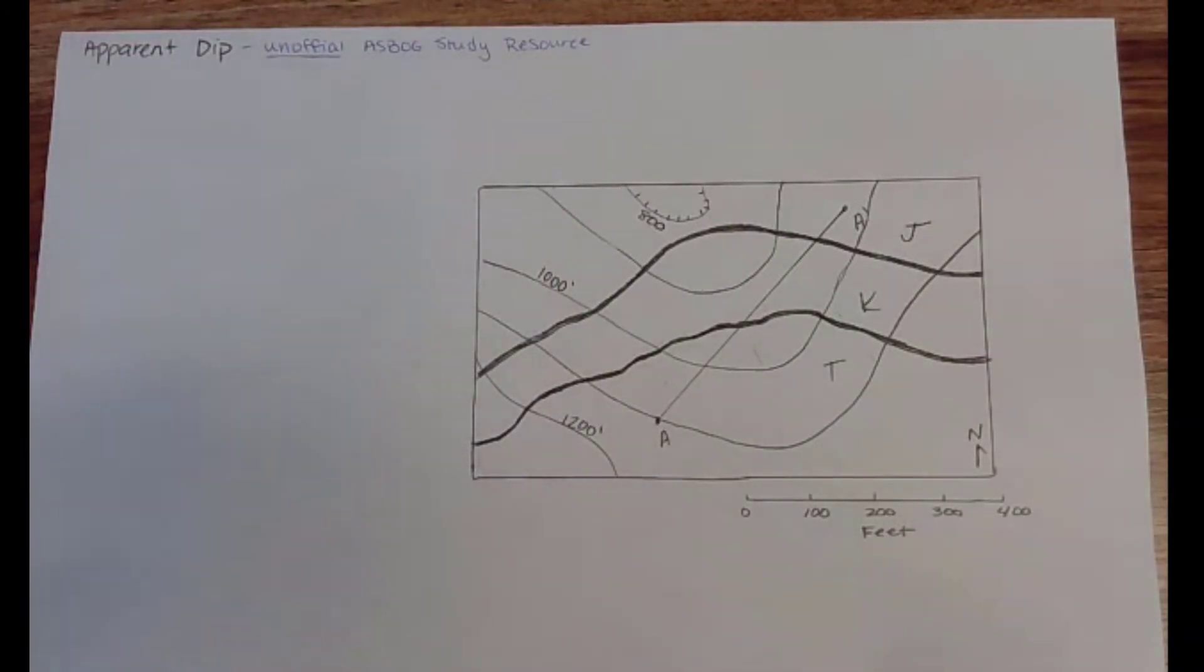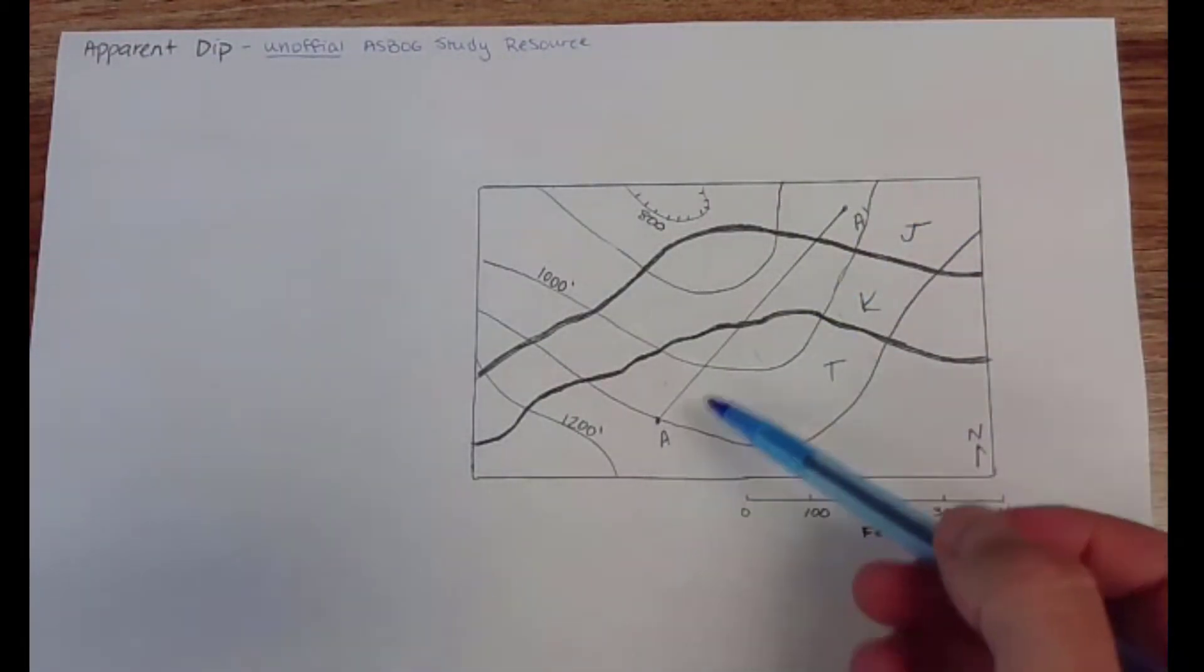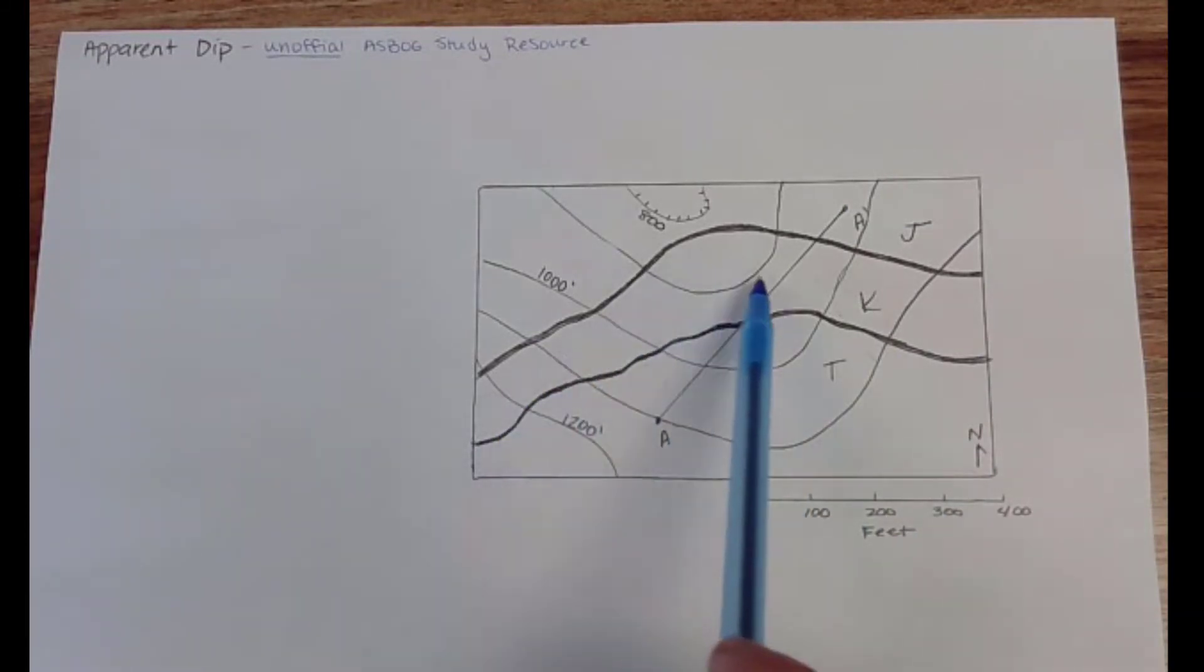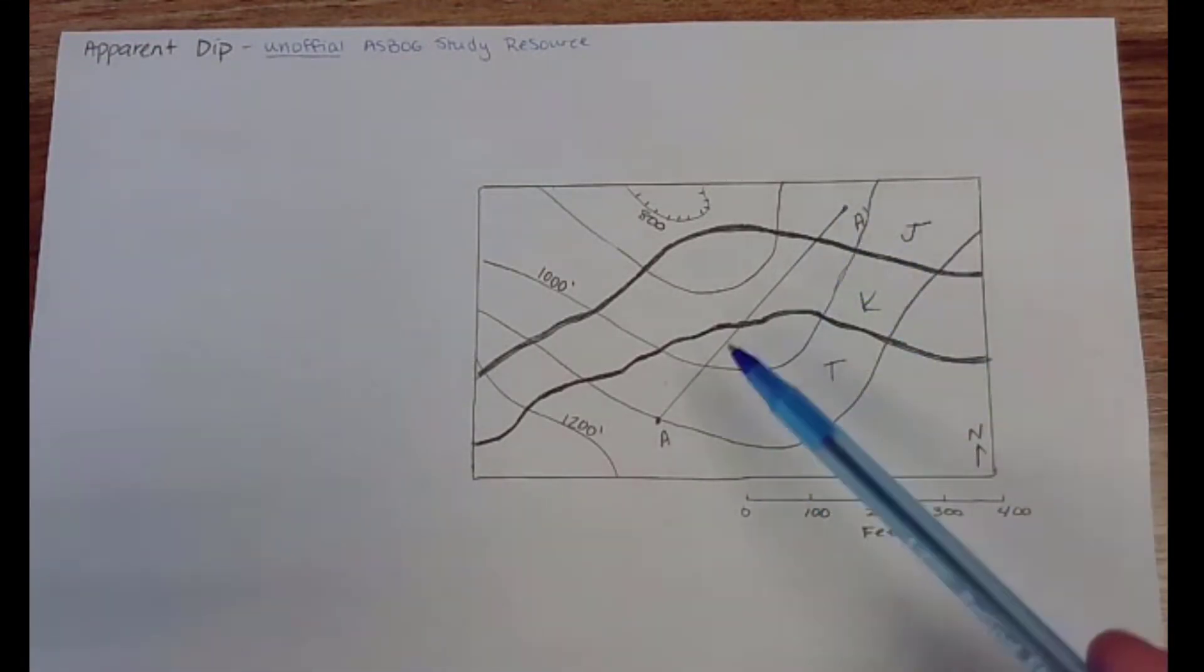So one question that I'm anticipating you all getting is something about apparent dip - finding how dip looks when it's viewed in a certain cross-section line. So let's say you are making a cross-section from A to A prime and you want to know how does this unit K dip if we view it in that line.